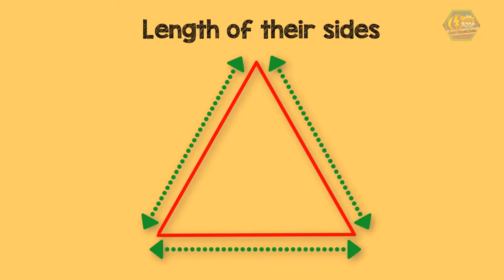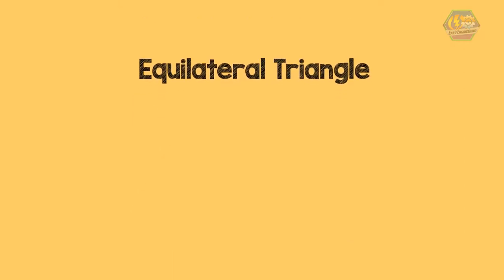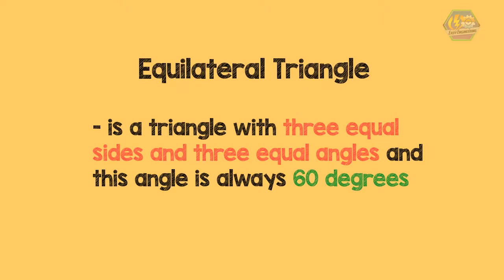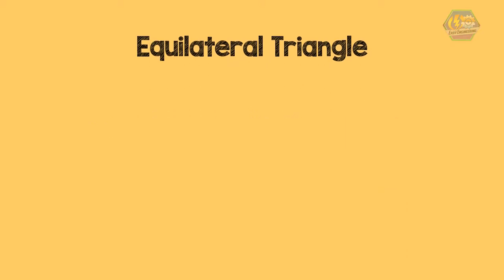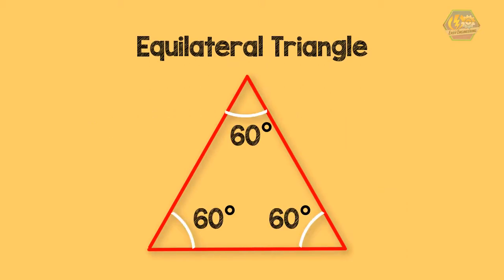The first type of triangle is the equilateral triangle. An equilateral triangle is a triangle with 3 equal sides and 3 equal angles, and each angle is always 60 degrees. The 3 small lines on the sides indicate that all 3 sides are equal.